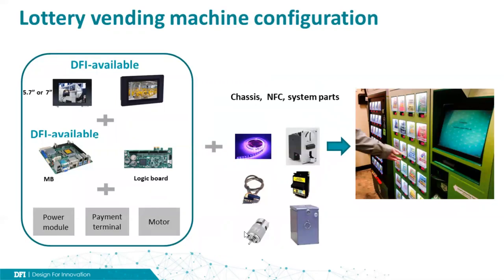A new generation vending machine usually requires two or three small-sized touch panels and, of course, a main board to drive all parts. Apart from the main board, the vending machine needs a logic board as well, which is related to security functions. The other key parts like the power module, payment terminals, and motors are all connected by cables. Plus, other parts like the LED strip, cash box, bill acceptor, and cash acceptor are all assembled into a big metal chassis — that's how a vending machine is produced.